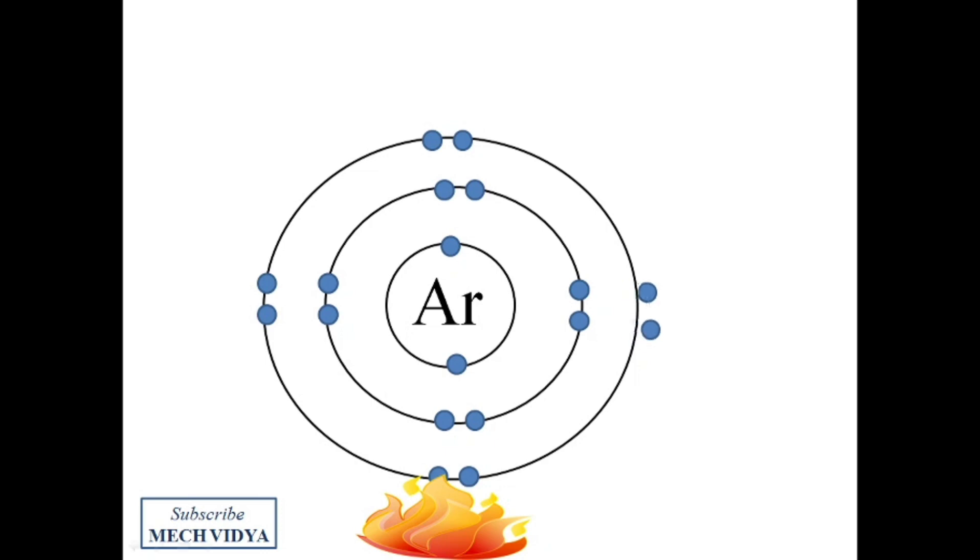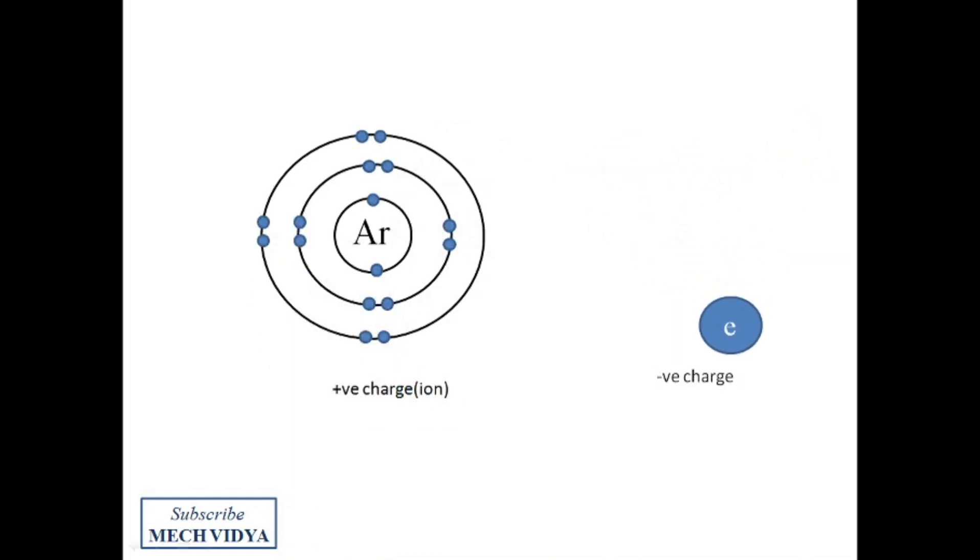In this process, the valence electrons get separated from the outermost shell as free electrons. As a result, the atoms become surplus in the positive charge while the free electrons become negatively charged.